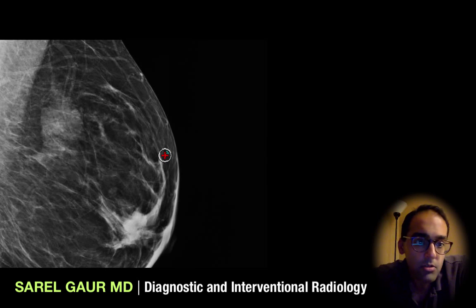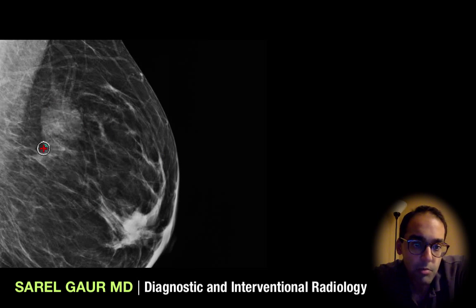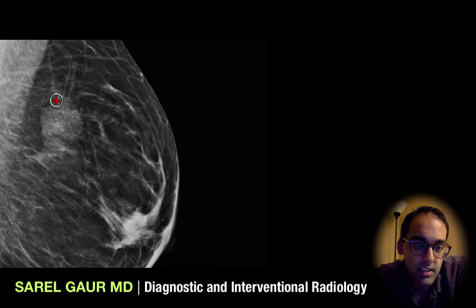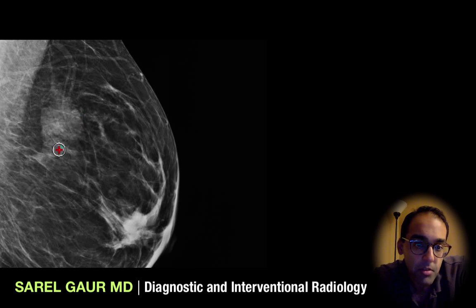I also want to show this image of the left breast, which shows what a cancer looks like when we don't pick it up at the DCIS stage. This is a large invasive ductal cancer in the posterior breast — basically cancer that has progressed from DCIS.